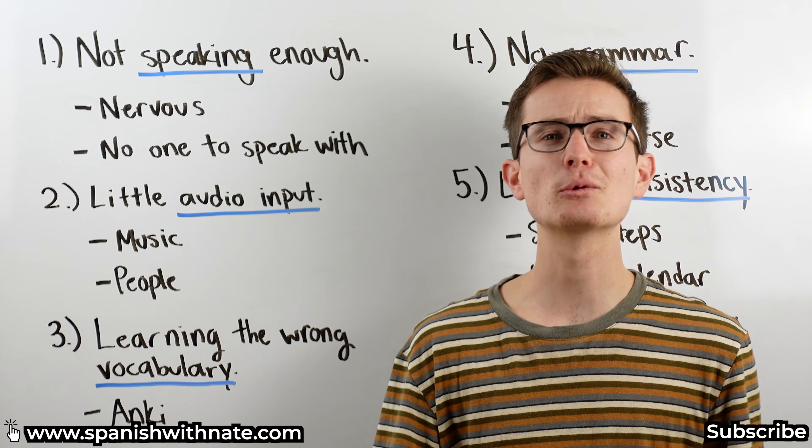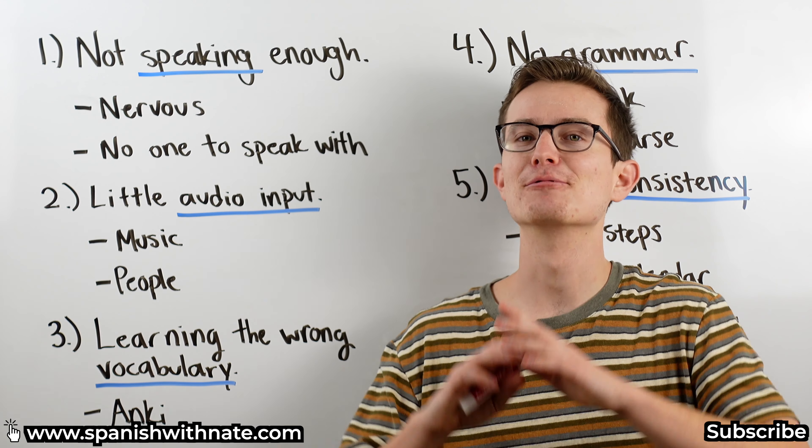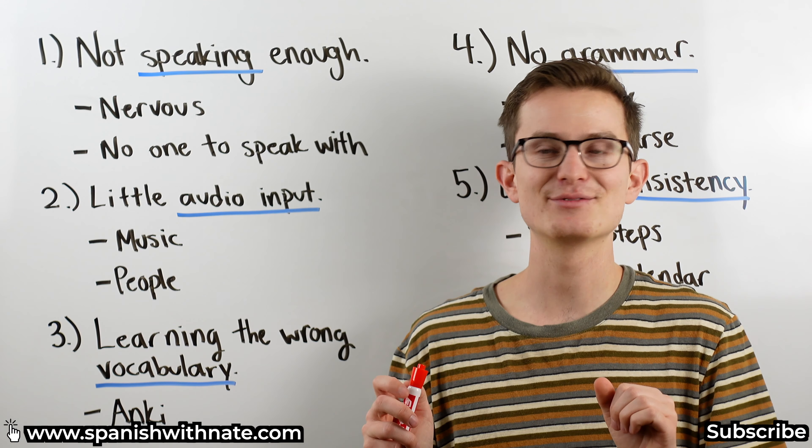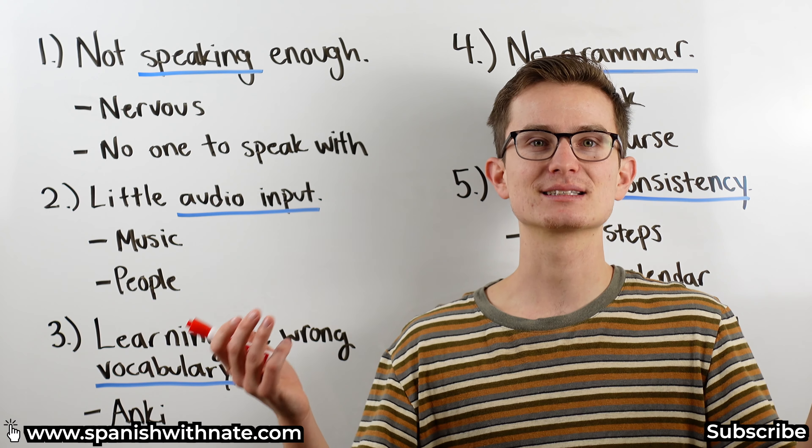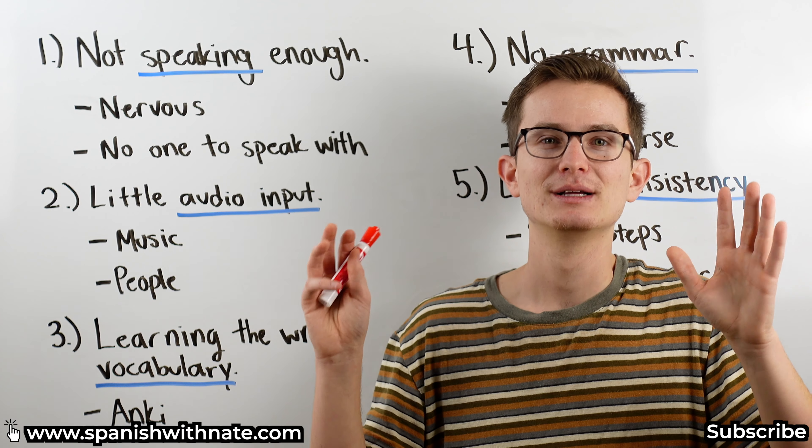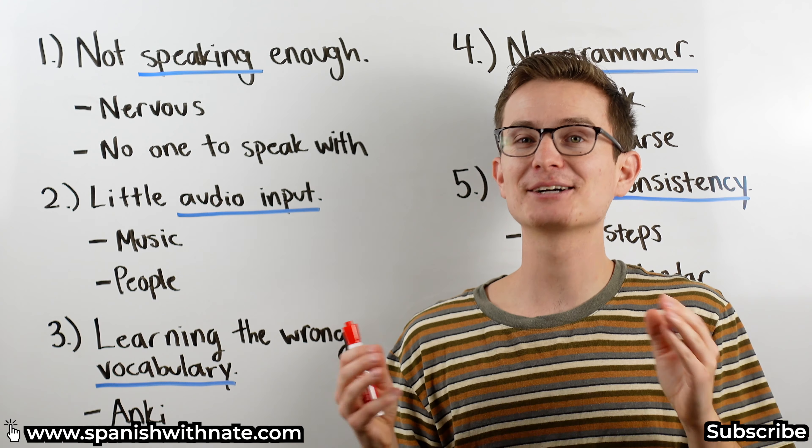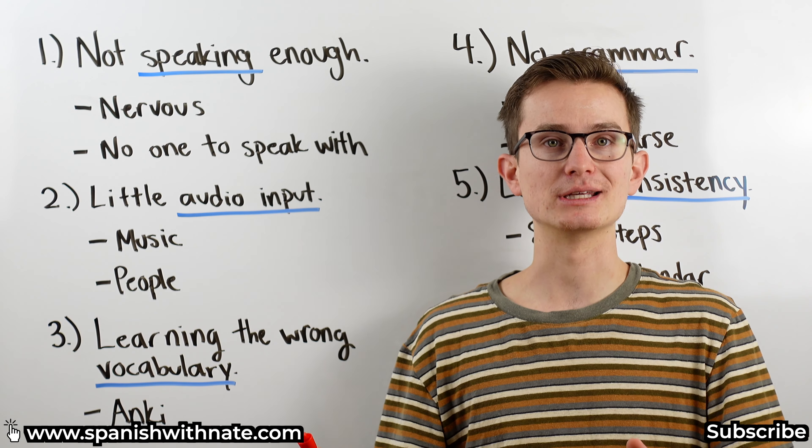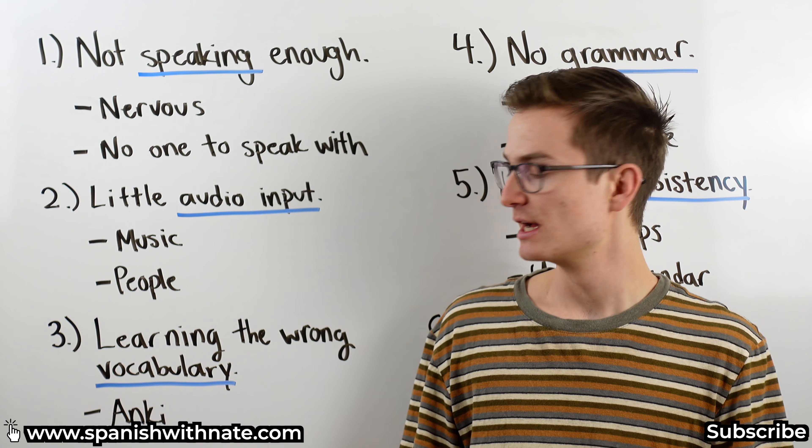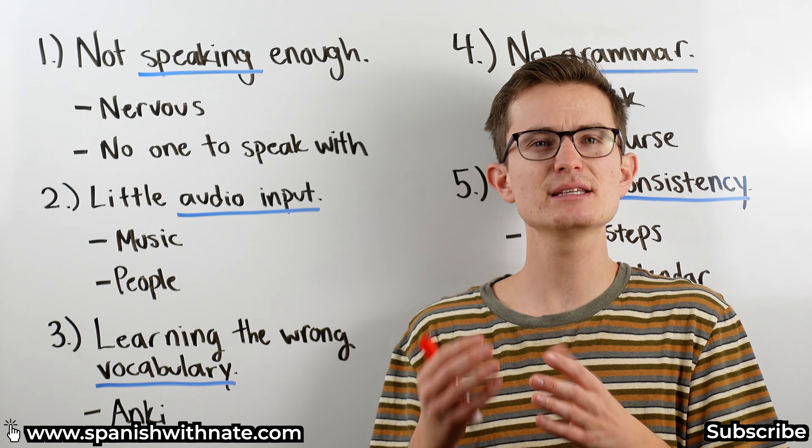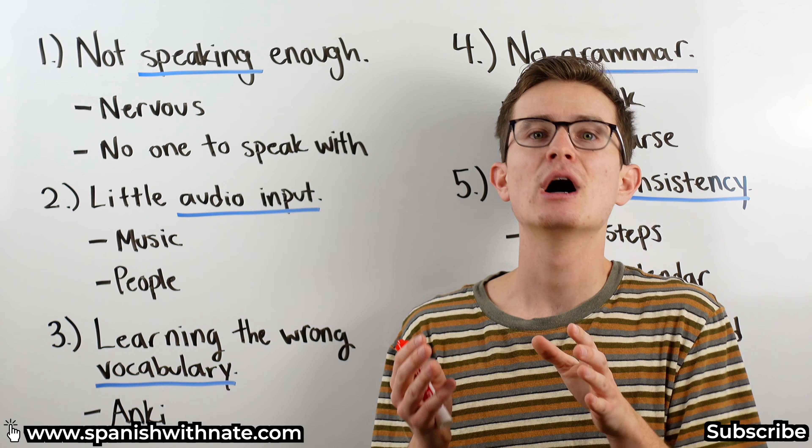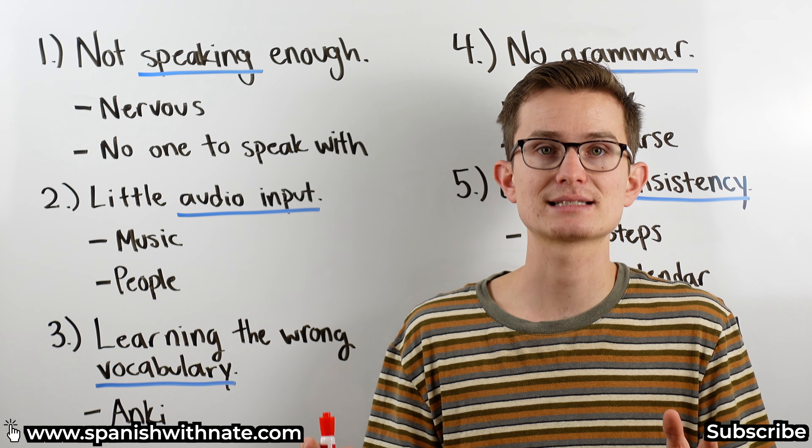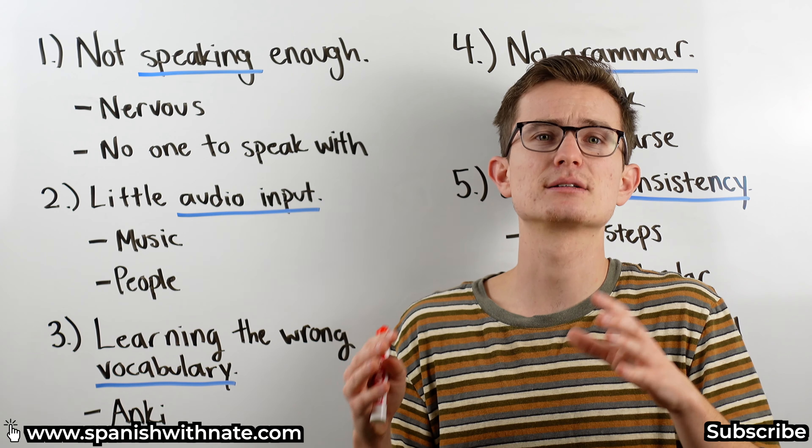Number three, learning the wrong vocabulary. A lot of us are learning really random vocabulary from lists we find online. We're learning things like rainbow, really random words we're probably not going to use that much. I recommend you use a free software like Anki. This is what's called spaced repetition flashcards. Basically, these are kind of like fancier versions of flashcards. You have to pay for this on the phone, but you can get it free on the computer. It's absolutely fantastic. It's kind of like regular flashcards on steroids.